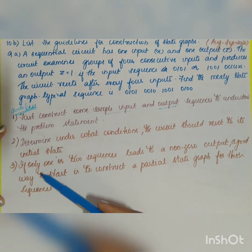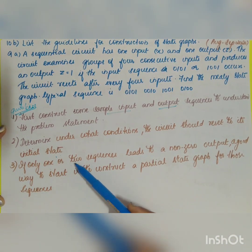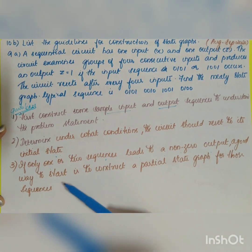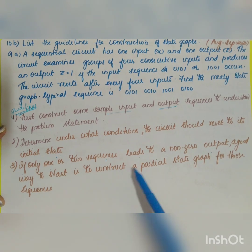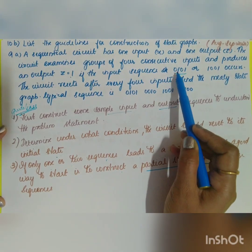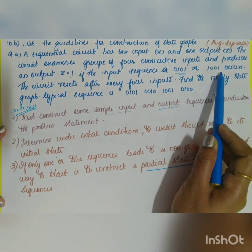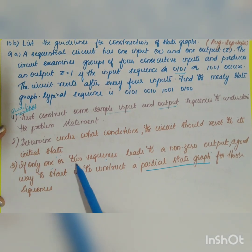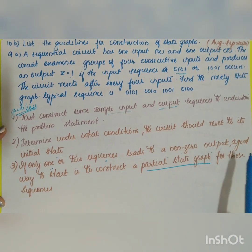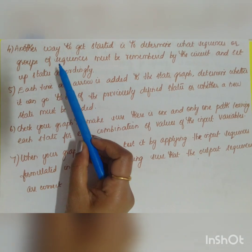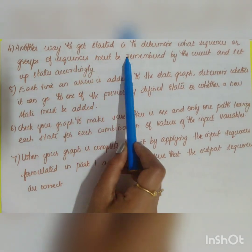Step three: if only one or two sequences lead to a non-zero output, a good way to start is to construct a partial state graph. In this case, z=1 for two sequences — 0101 or 1001 — that is a non-zero output. So if only one or two sequences lead to a non-zero output, construct a partial state graph for those sequences.